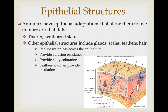In general, amniotes have epithelial adaptations that allow them to better exist in terrestrial habitats. They have thicker keratinized skin, but also other epithelial structures including glands, scales, feathers, and hair. These have a variety of functions, including reduction of water loss across the epithelium, protection against rubbing or abrasion, and sometimes communication or cryptic coloration. Feathers and hair are really important in insulation and are found only in mammals and birds, which are our primary groups showing endothermia.